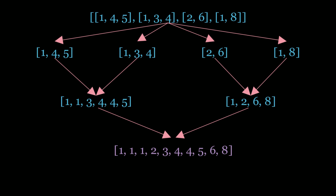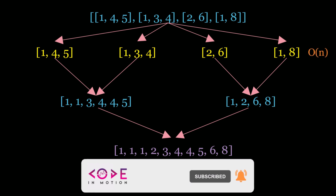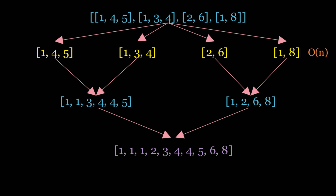Now let's look at the time complexity. How many operations are we performing on the first row? When we merge all of these elements we have to iterate through all of them, so this is O of n time. Here n is all the elements in all of the linked lists. If we look at the second row, this is also an O of n operation — to merge these two lists we have to iterate through all of them. And lastly, to combine the final list, this is also O of n.